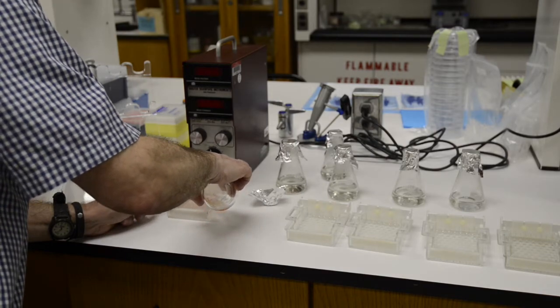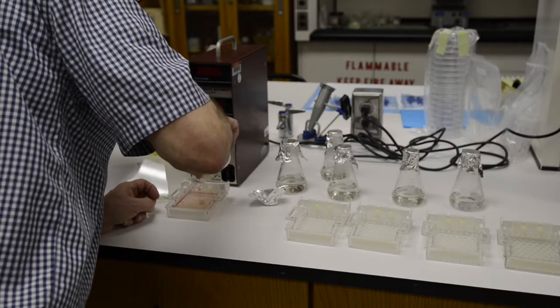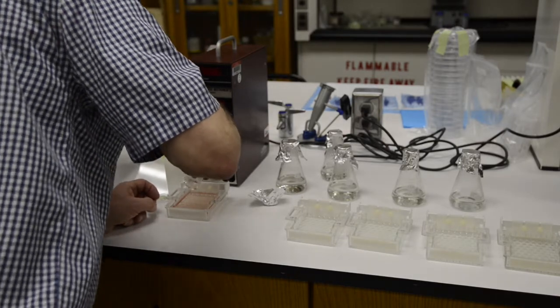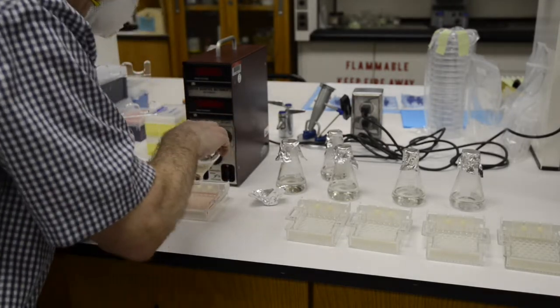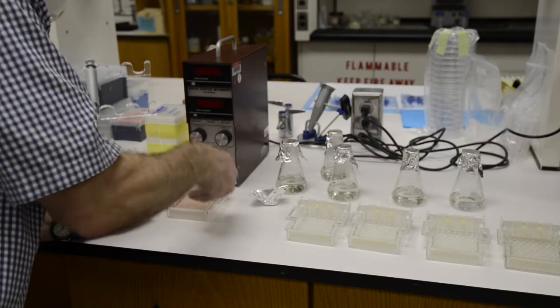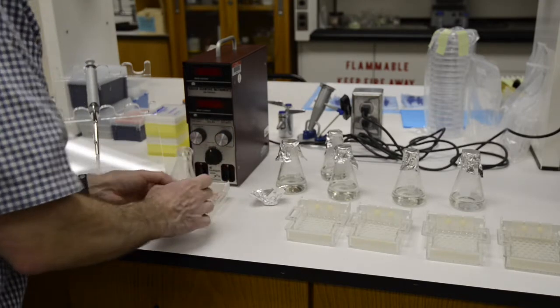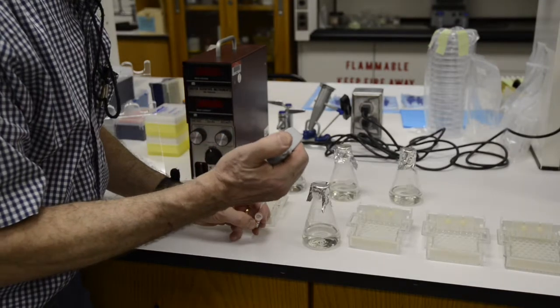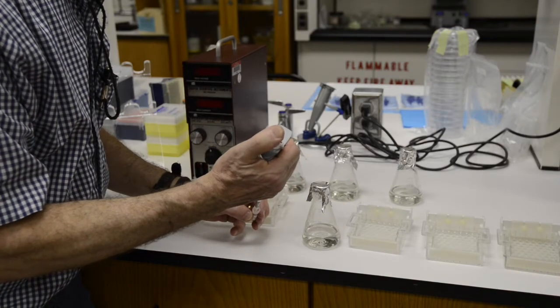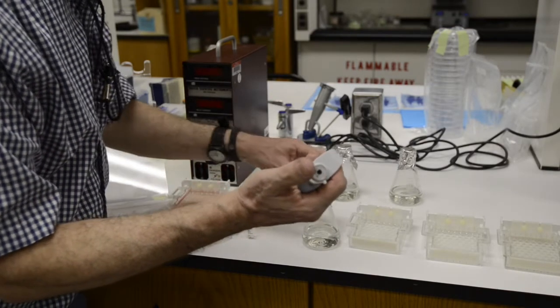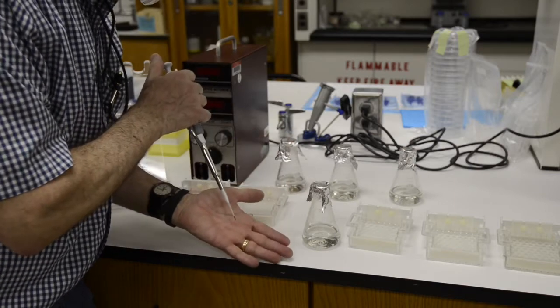Pouring your gel should be done with the comb already in place. If there are any bubbles that form, use a pipette tip to move the bubble off to the side. And then don't touch the casting tray. Let it solidify. It'll take 5 or 10 minutes for it to solidify, and then you'll be ready to load your gel.